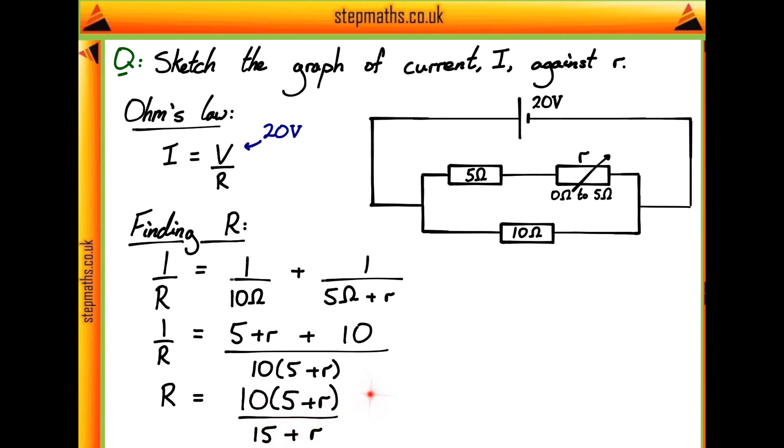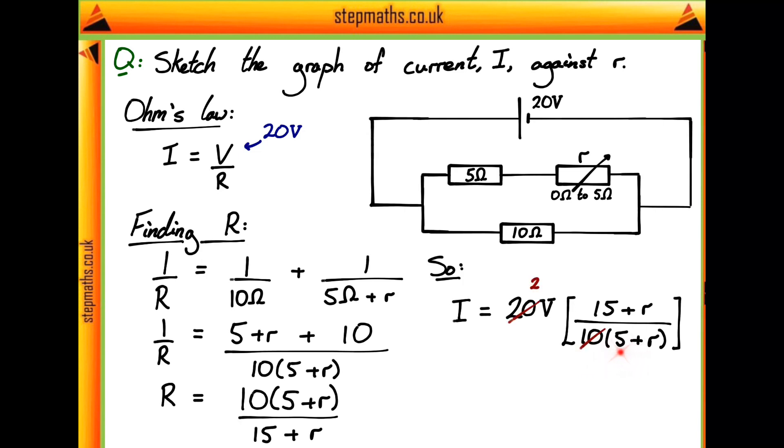Then to get our expression for current, all we have to do is substitute this back into our original equation which we had at the top here, giving us that we have 20 volts multiplied by 15 plus R, divided by 10 multiplied by 5 plus R. And then the tens are going to cancel out, giving us this factor of 2 on top, which simplifies to this expression here.